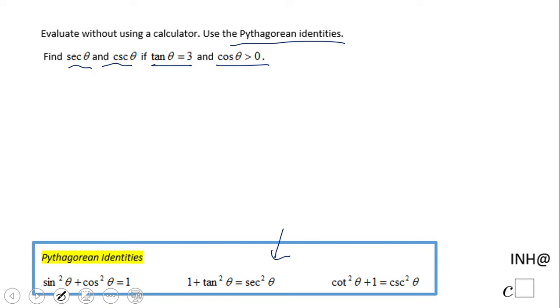Which of these three identities can we use? Since the tangent is given, obviously this one will allow us to find secant very fast. So we're gonna have 1 + tan²θ = sec²θ. That means 1 + 3² = sec²θ. 1 + 9 = sec²θ.